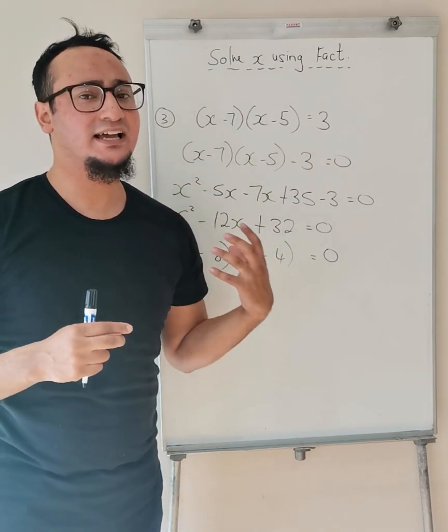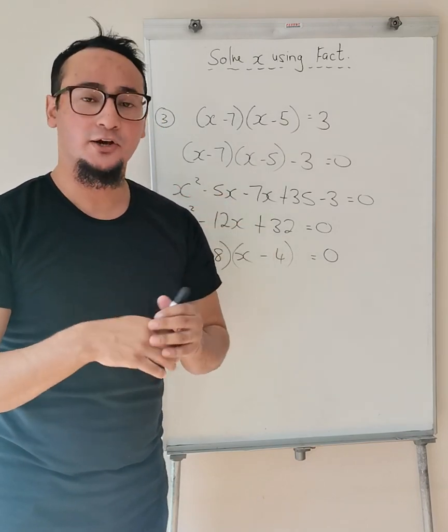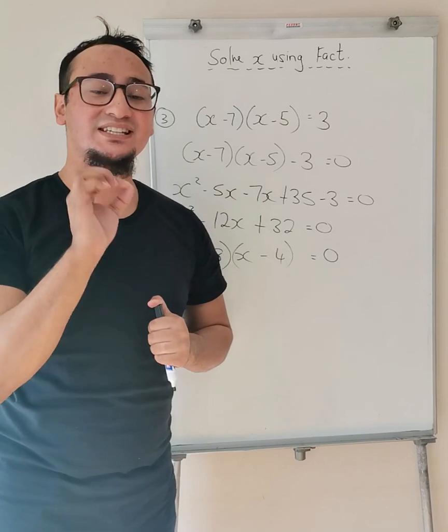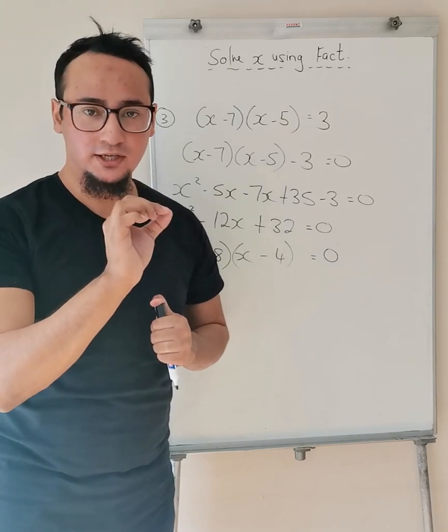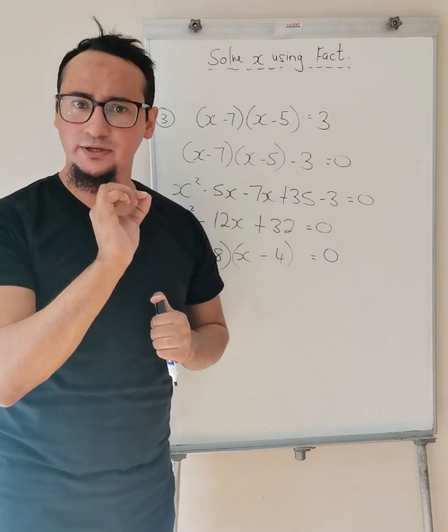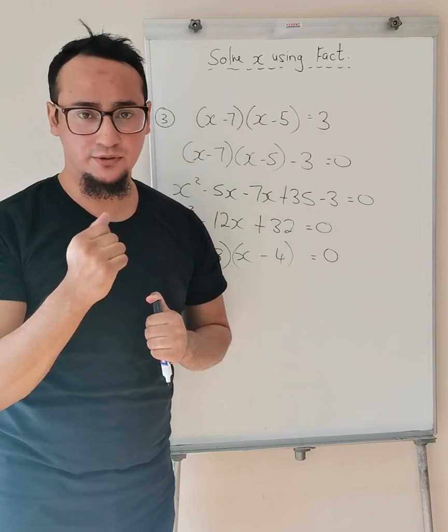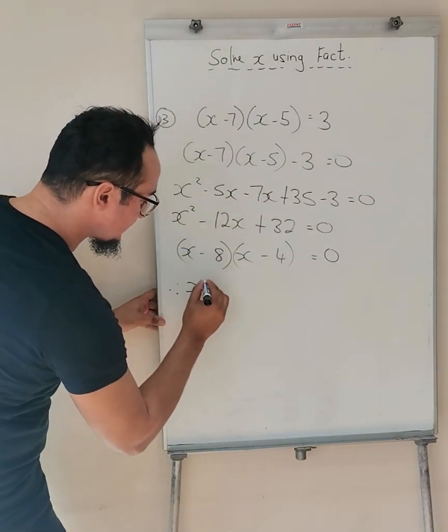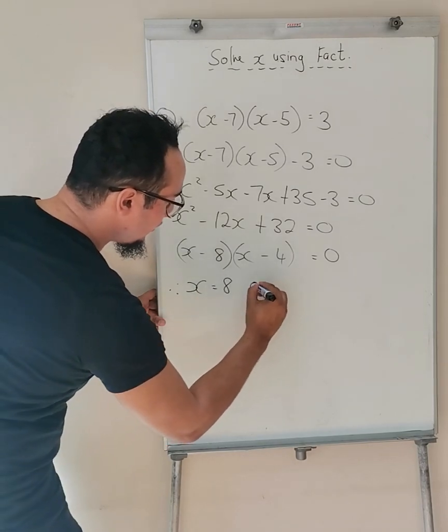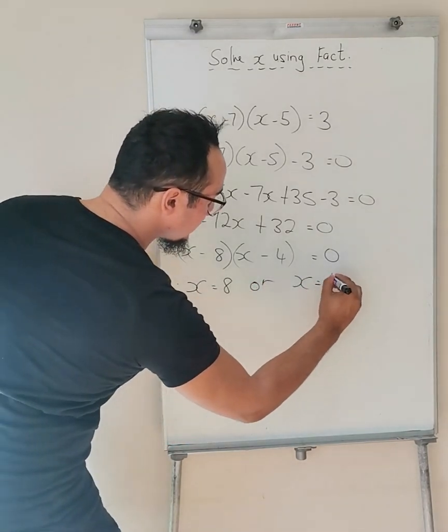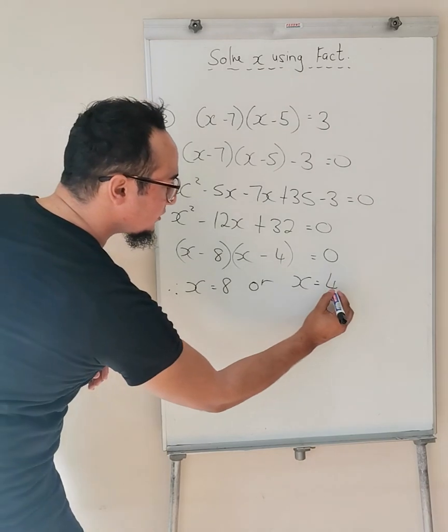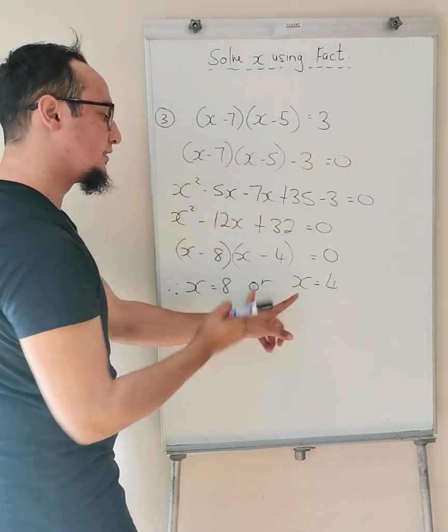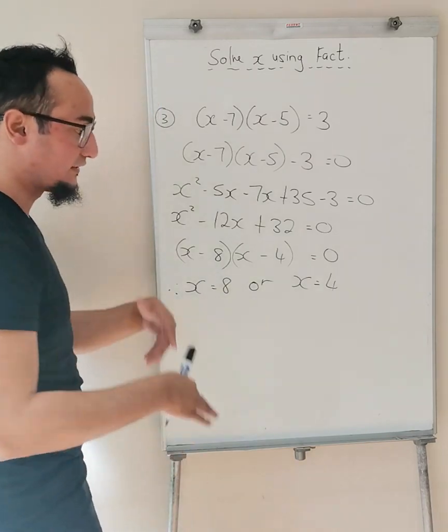If you did not understand that, please go to my YouTube channel, go to my grade 10 or 9 folder, and make sure that you search trinomial. You'll find two videos over there, different types of examples. So in this part, therefore, X is equal to positive 8 or X is equal to positive 4. And if I substitute my value of 8 in here, I'll get 3. The same thing with 4. And that is it.